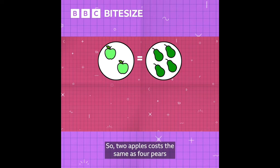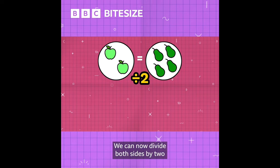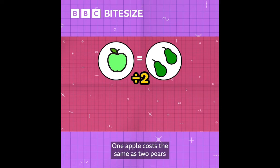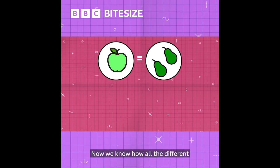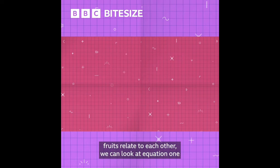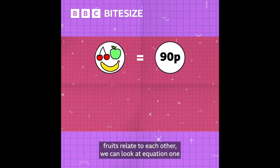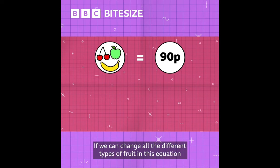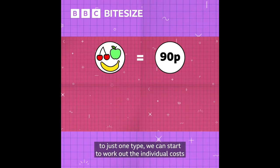So two apples cost the same as four pears. We can now divide both sides by two — one apple costs the same as two pears. Now we know how all the different fruits relate to each other, we can look at equation one. This equation is the only one with the price in it. If we can change all the different types of fruit to just one type, we can start to work out the individual costs.